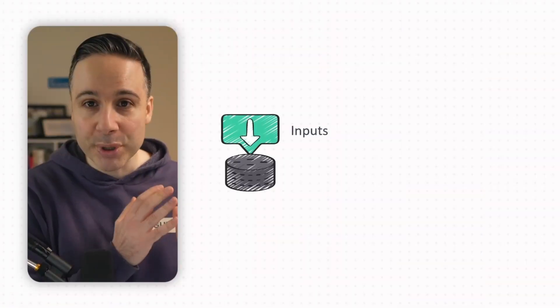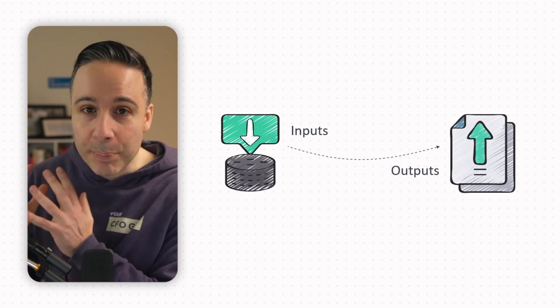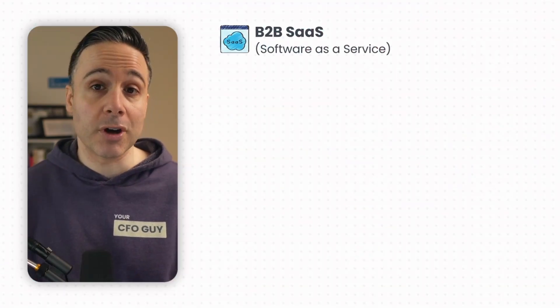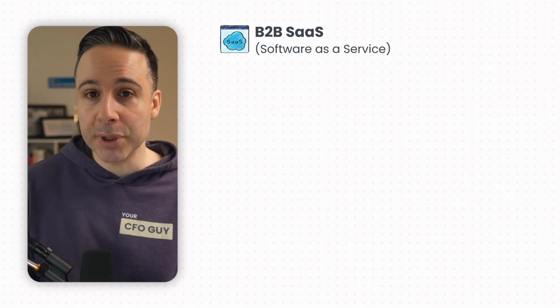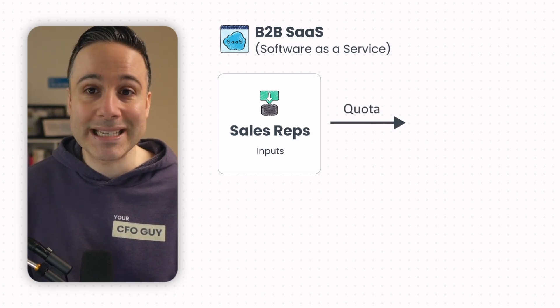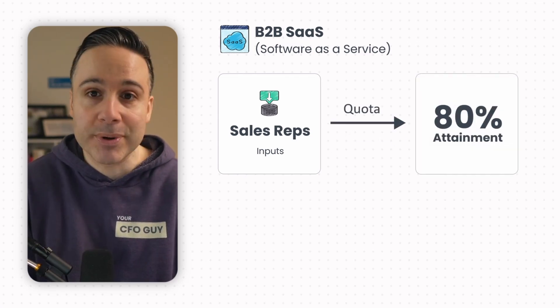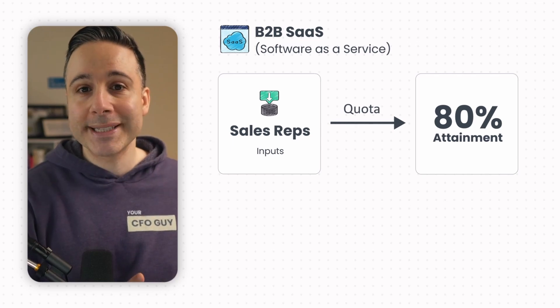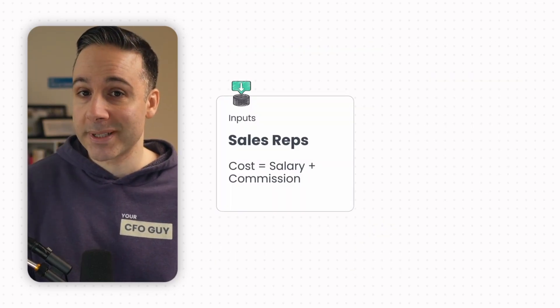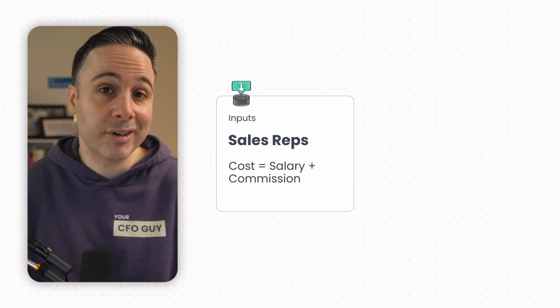Before we upgrade to a level two forecast, let's enhance our level one forecast. The key here is to focus on inputs and how they drive your outputs. What are some inputs? We call those acquisition channels. A lot of my clients sell B2B software as a service, and an input can be sales reps. Those sales reps get a quota, and on average they attain that quota by maybe 80% across the board. They also can take a few months to ramp up at first. So inputs: number of new sales reps, and the cost of that is their salary and commissions.